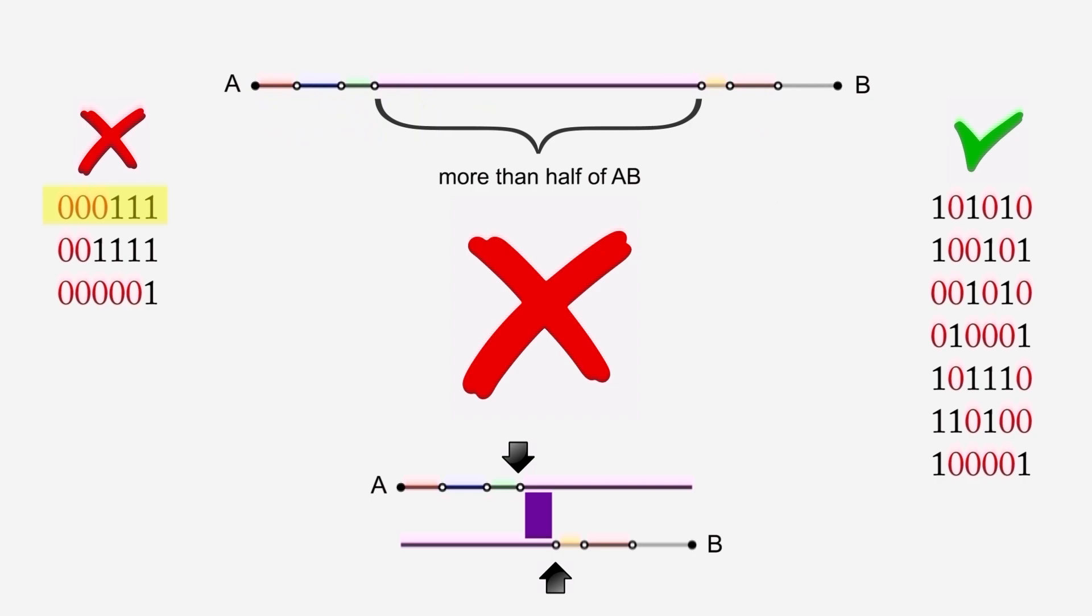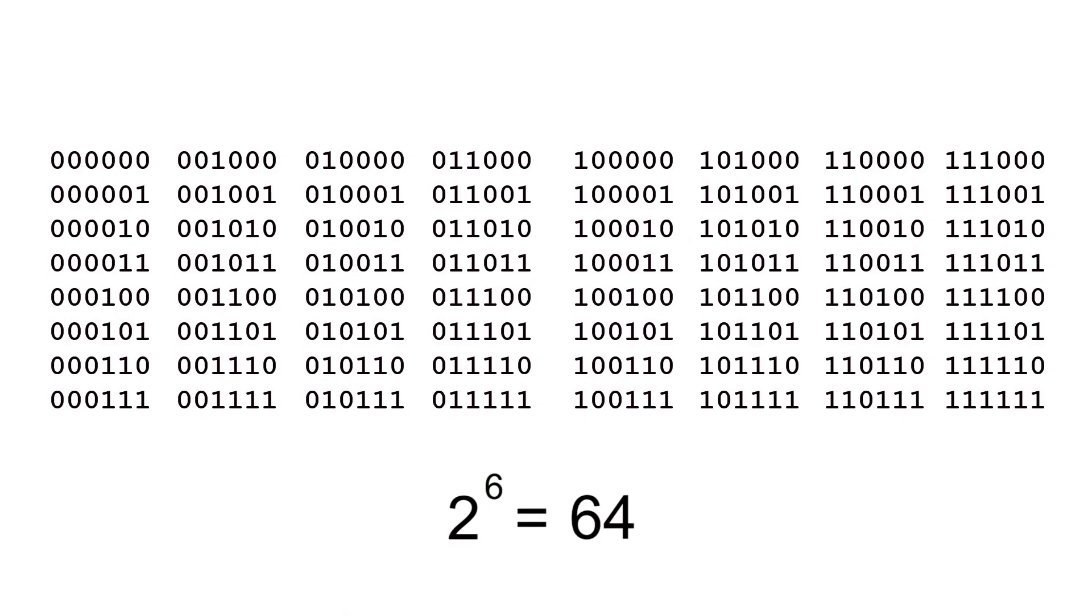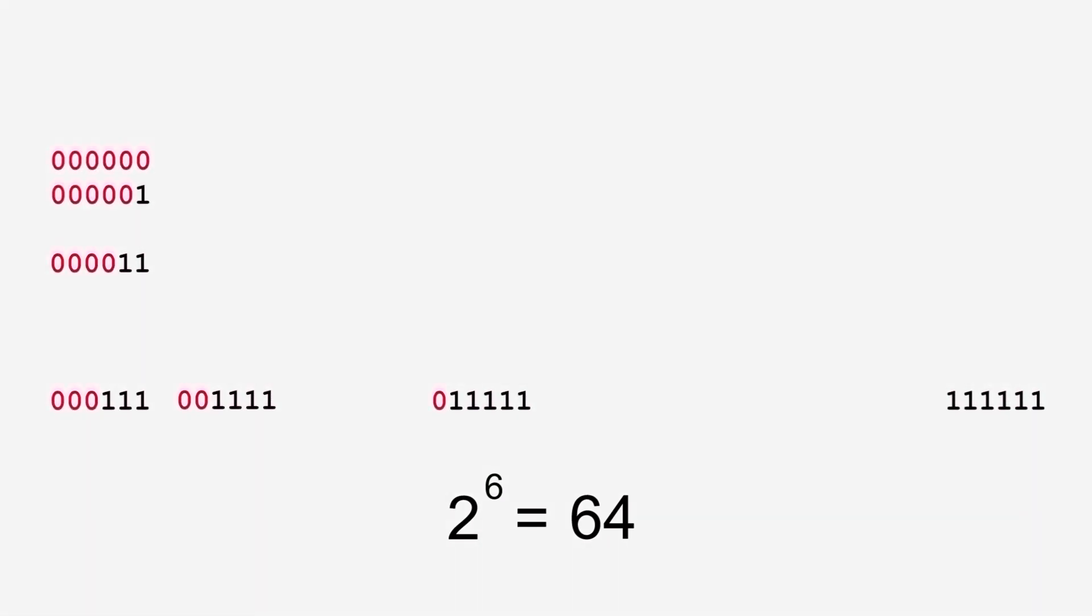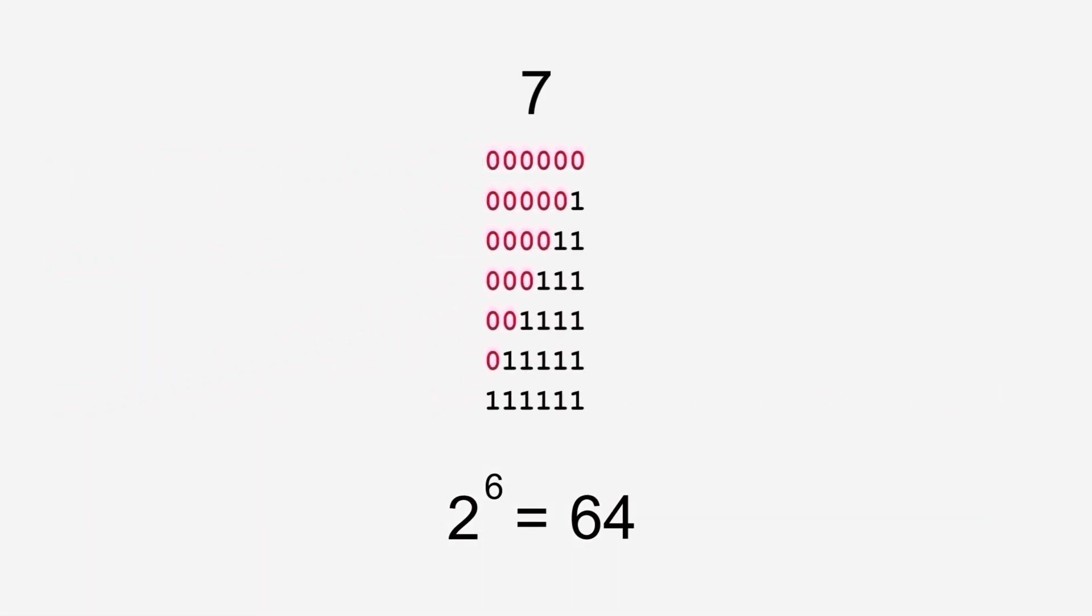How likely is that to occur? There are 2 to the 6th possible arrangements of six points relative to each other in our stacked view. Each of the 64 arrangements is equally likely to occur. How many of those 64 arrangements have all the zeros preceding the ones?